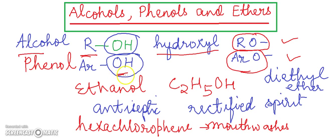When the hydroxyl group is attached with the aryl substituent, then it is known as phenol. For a very general example, for the alcohol is ethanol. Ethanol has the chemical formula C2H5OH. This is used as an antiseptic, also known as rectified spirit.